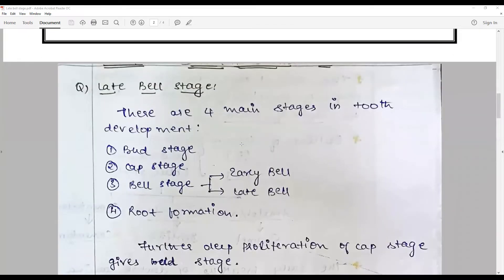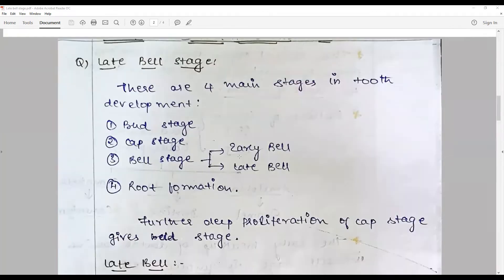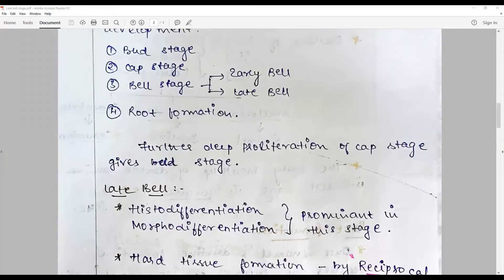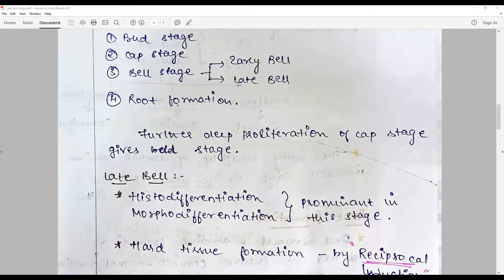So to begin with, the question should begin like this: There are four main stages in the tooth development - that is bud, cap, bell. Bell can be further divided into early bell, late bell, and root formation. With the further deep proliferation of cap stage, it proceeds to the bell stage, and late part of that is the late bell stage. Here the histo-morpho-differentiation of the prominent physiological changes happens.